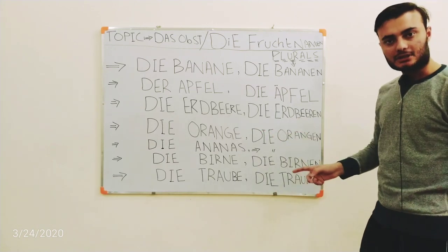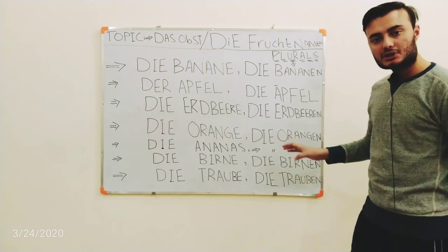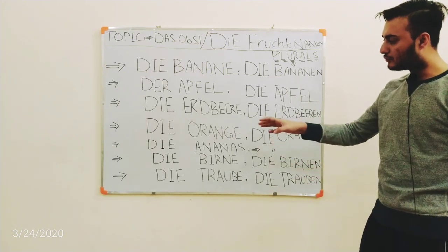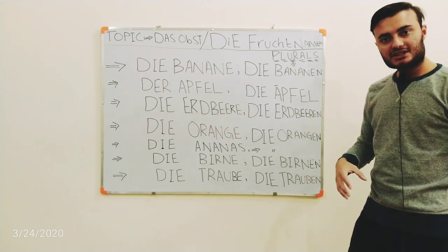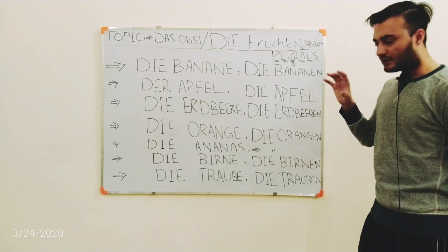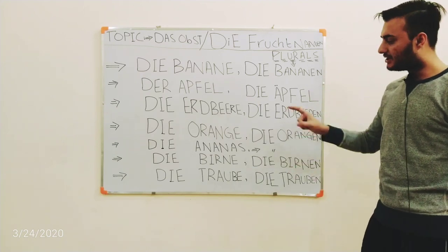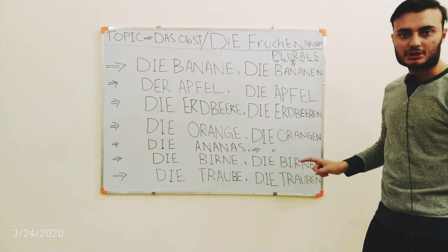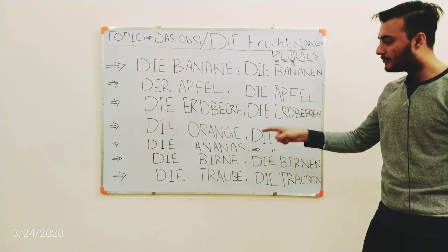Next one is 'die Ananas' — the pineapple. The word used for plural also remains the same: 'die Ananas.' It is used for both singular and plural. I will explain later on how to differentiate. For now, just learn that 'die Ananas' is used for both the pineapple and the pineapples.